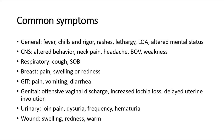For the central nervous system: altered behavior, neck pain, headache, blurry vision, and weakness. For respiratory: cough and shortness of breath, chest pain, swelling, or redness. GIT symptoms include pain, vomiting, or diarrhea. Genital symptoms include offensive vaginal discharge, increased lochia loss, or delayed uterine involution. Urinary symptoms include loin pain, dysuria, frequency, or hematuria.